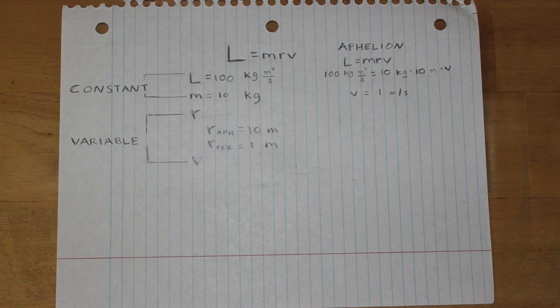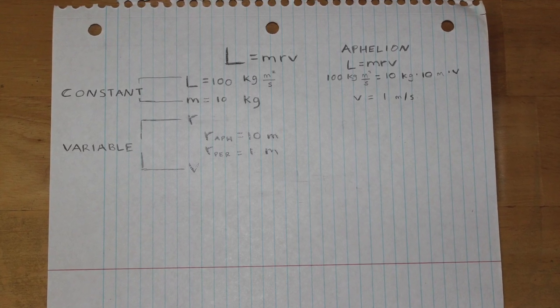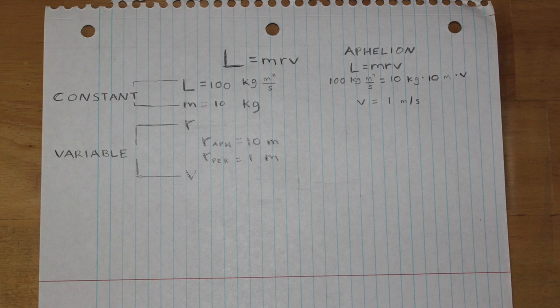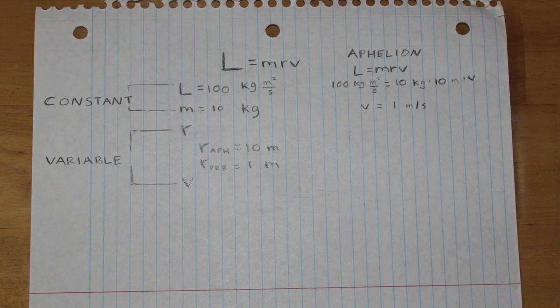All we need to do is plug these values into the angular momentum equation for aphelion and perihelion and we can solve for their velocities.